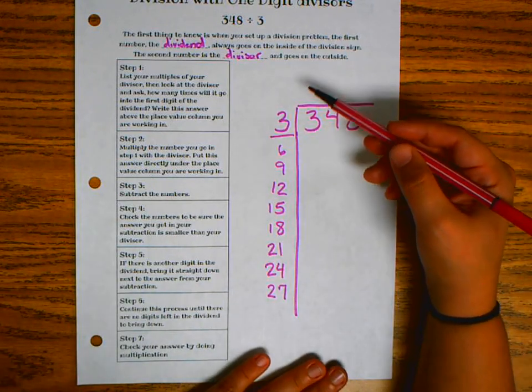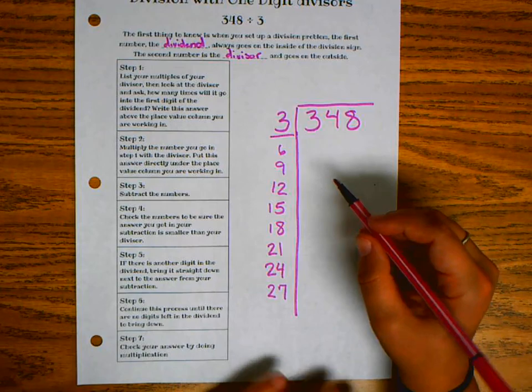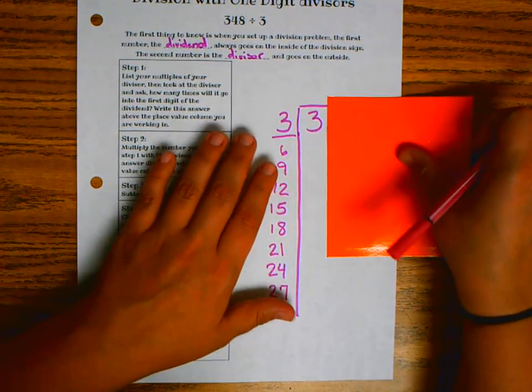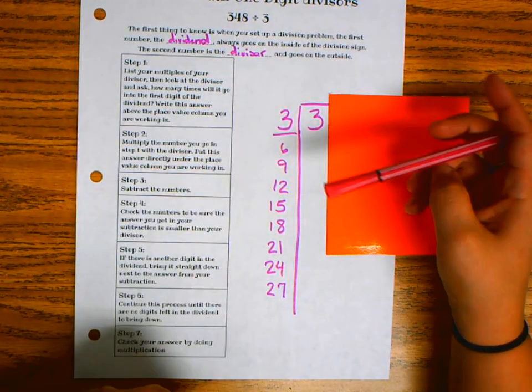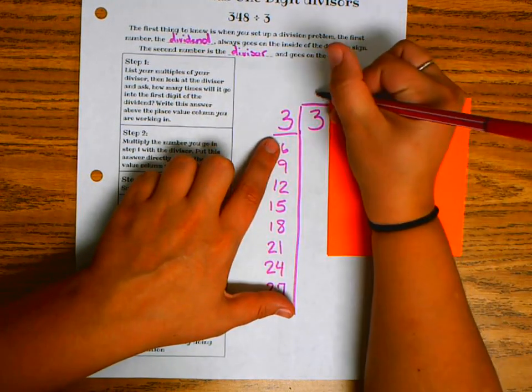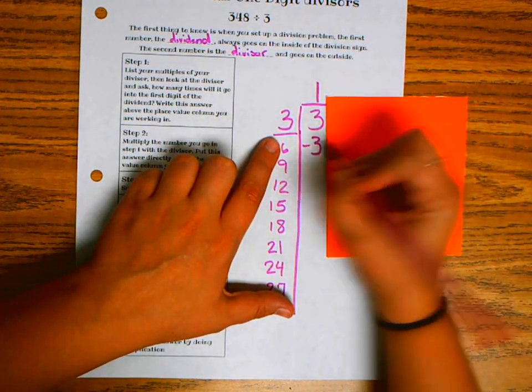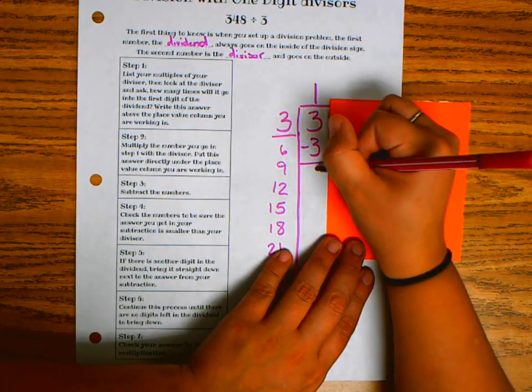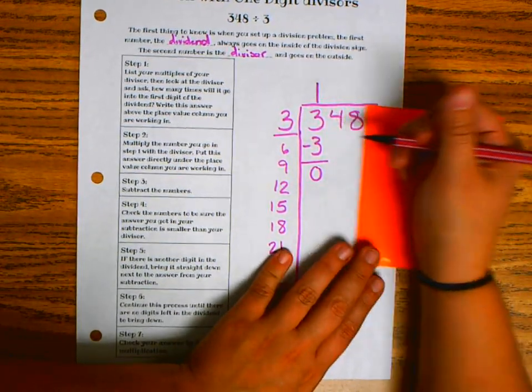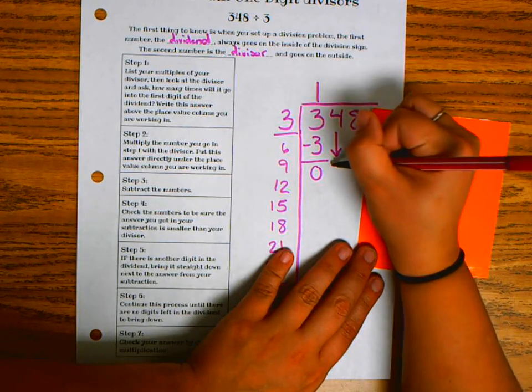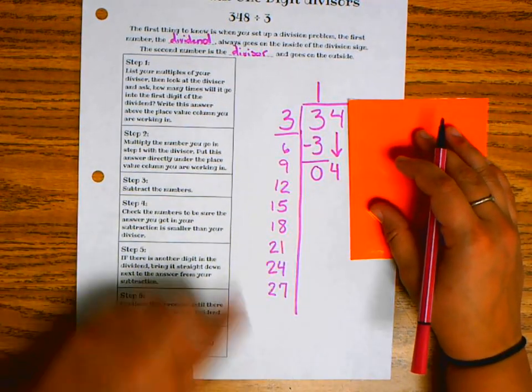So the first step was to divide. And now we have to multiply. So how many groups of 3 can go into 3? Well, that's only one group. So then now we subtract. 3 minus 3 is 0. Bring it on down. So I bring the next number down and bring it on back. So now I start again.